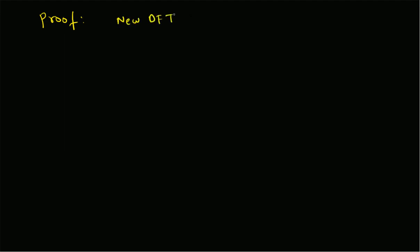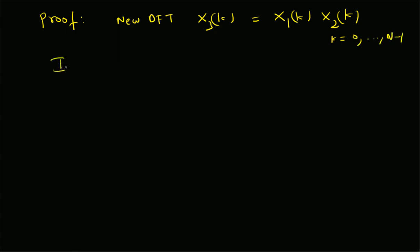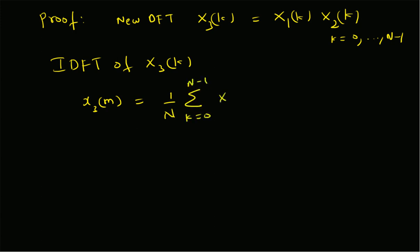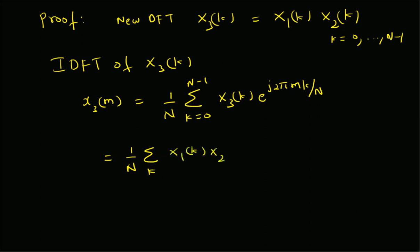Now let us look at the proof for this theorem. Let us define a new DFT X3(k), which is basically the product of X1(k) and X2(k), that is multiplication in the frequency domain, for values of k from 0 to N-1. We can determine the IDFT of X3(k) using the definition: x3(m) = (1/N) * sum over k from 0 to N-1 of X3(k) e^(j2πmk/N). Since X3(k) is the product of the two DFTs, we have x3(m) = (1/N) * sum over k from 0 to N-1 of X1(k) X2(k) e^(j2πmk/N).